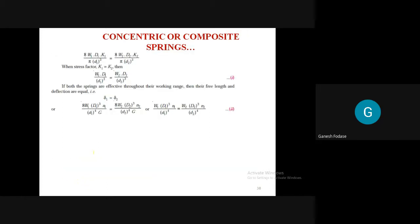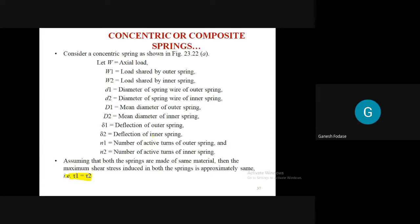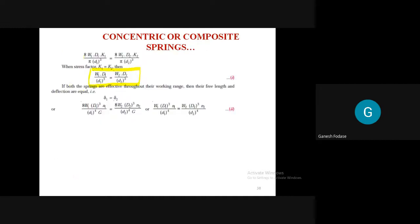If we equate tau1 and tau2, and since both are of the same material, the stress factor K1 equals K2. Hence the simplified version gives: W1·D1 / d1³ = W2·D2 / d2³. This is equation number 1. We simply equated the stress equations - tau1 equals tau2, both springs are helical, so we use the same tau formula. With K1 equals K2 for same material, we obtain equation number 1.